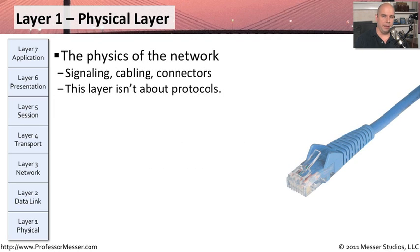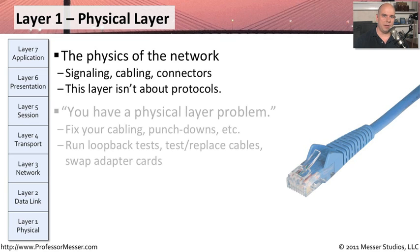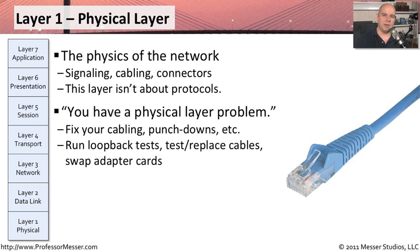Layer 1 of the OSI model is the physical layer. We're not really talking about protocols at this point — we're more interested in signaling, how the cabling is working, and how the connectors are working on the devices we're using. When we talk about problems at this layer, we say you have a Layer 1 problem: an issue with cabling, punch downs, or your network interface card not sending the proper signal. You're usually swapping out cables and interface cards to get the signal working. The problem has nothing to do with your web server — it's everything to do with the copper or fiber being used.